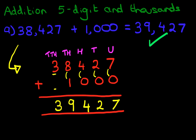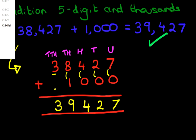That is correct. Now let's clear the screen so we can work on a second example. What is 74,389 plus 8,000?